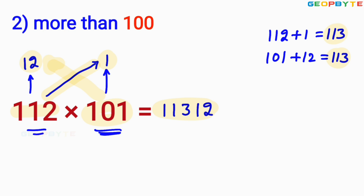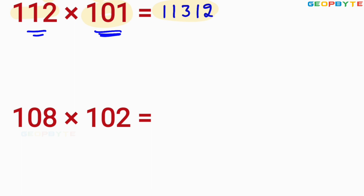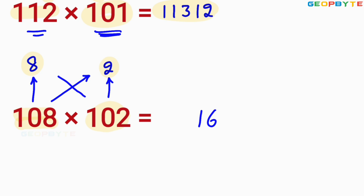Similarly, let us take another value: 108 into 102. This 102 is above 100 by 2. 108 is also more than 100 by 8. Then you multiply 8 and 2. What is 8 into 2? 8 into 2 equal to 16. Then you add 108 and 2 or 102 and 8. 108 plus 2 equal to 110, or 102 plus 8 also equal to 110. You write that value 110 before 16. Therefore, 11016 is the value of 108 into 102.